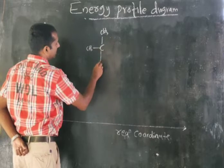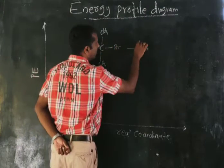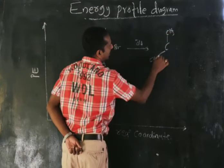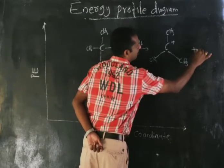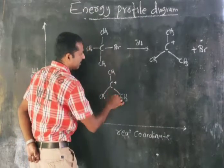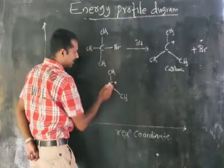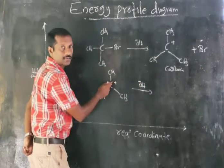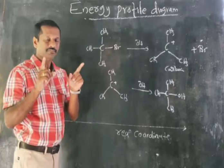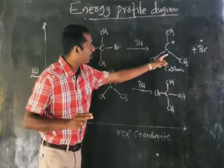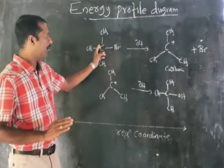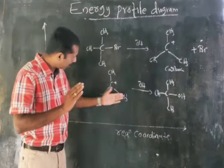In SN1 reaction, for example CH3CH3CH3CBr, the nucleophile attacks the carbocation. So CH3CH3CH3C+ plus Br minus forms, and in the second step the nucleophile attacks the carbocation to get the final product — the alcohol. SN1 reaction is a two-step reaction: first step is formation of a carbocation, and in the second step attack by the nucleophile to get the final product.